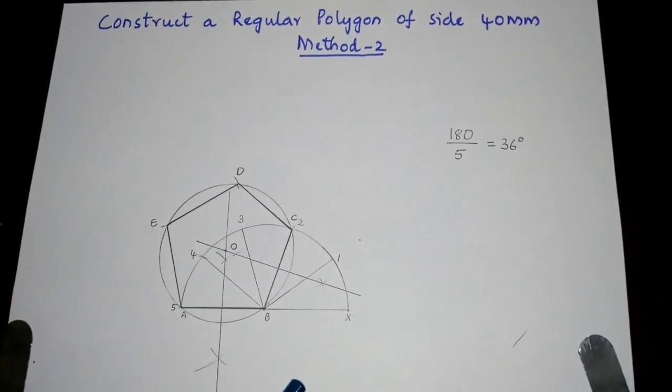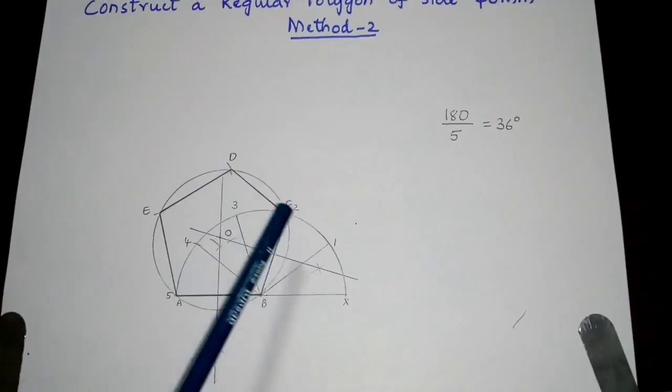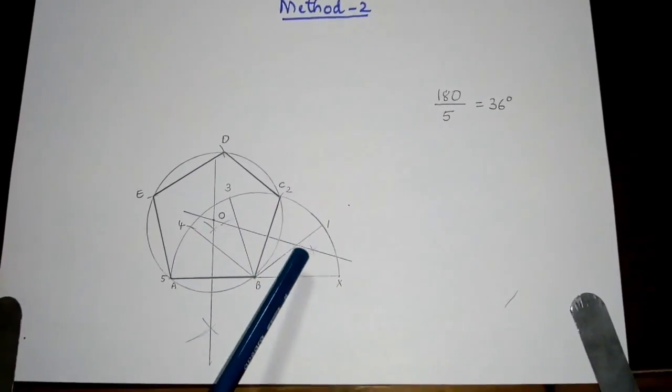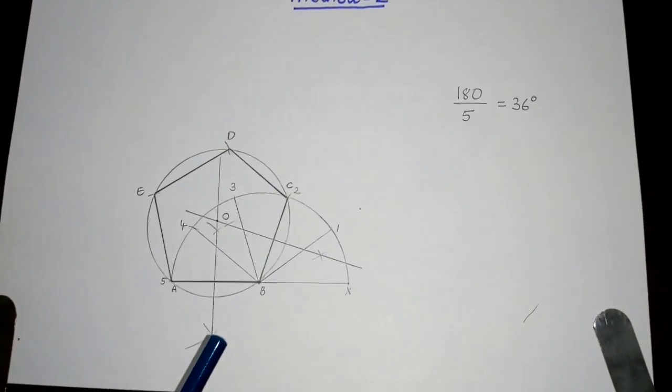If it is a hexagon, divide the semicircle into 6. If it is a septagon, divide the semicircle into 7. If it is an octagon, divide the semicircle into 8 equal parts.